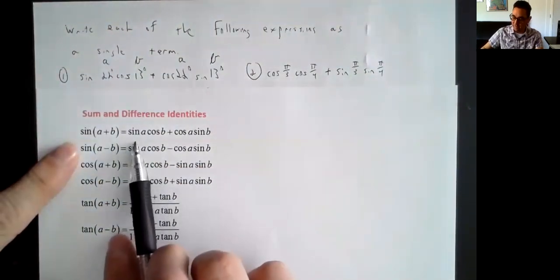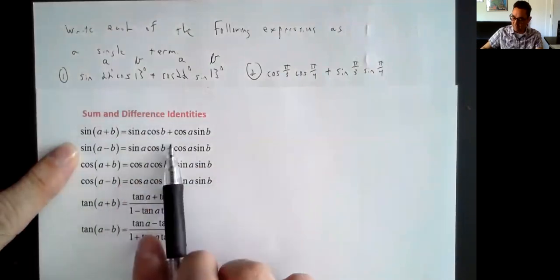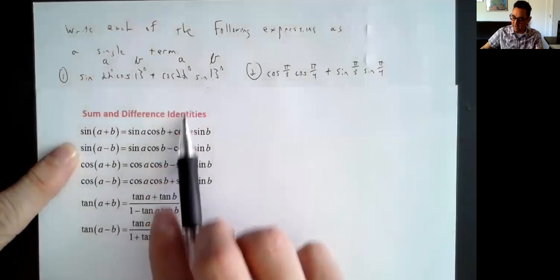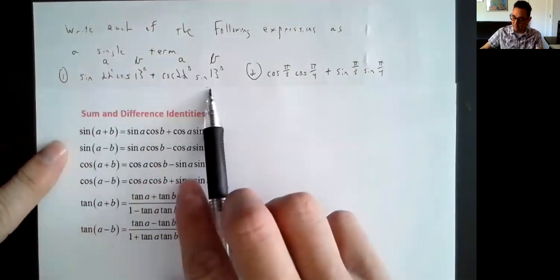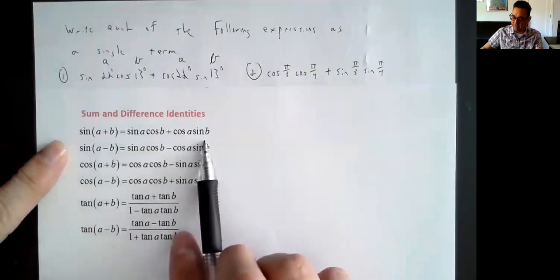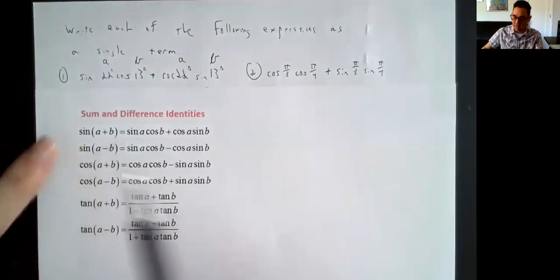It looks like this one: sine of A times cosine of B plus, and I do have a plus there, cosine of A plus sine of B. Sure enough, this expression turns out to exactly match what we see right here in the sine of A plus B formula.